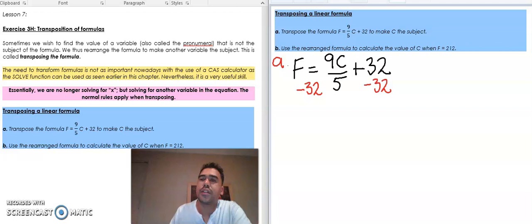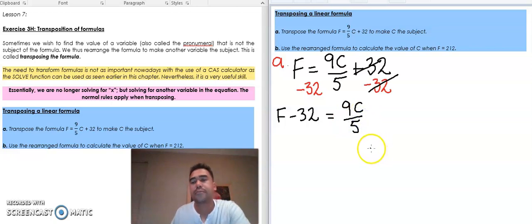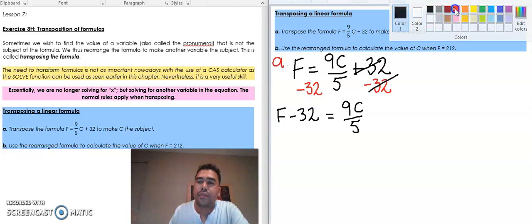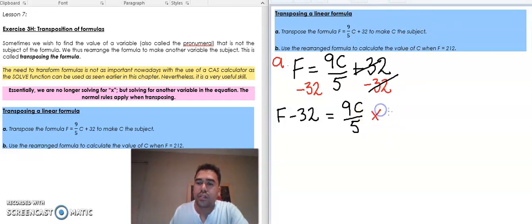So on the left hand side, I'll be left with F subtract 32. This plus 32 and minus 32 they get cancelled out to turn into a zero, and what I'll be left with is 9C over 5. This is nine times C divided by five. So the last thing that's been applied to this new side now is a divide by five, so to get rid of it I want to times by five. So I'm going to times this by five, this whole thing by five to get rid of the divide by five, and as a result I also have to times this by five.